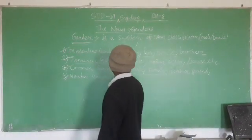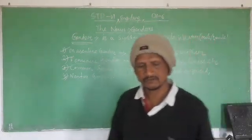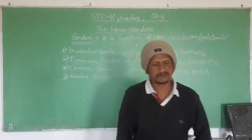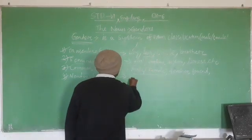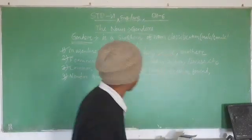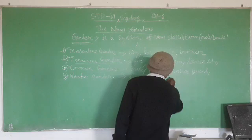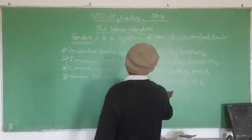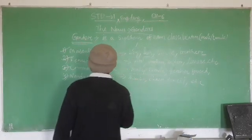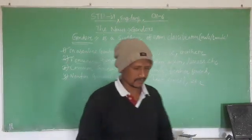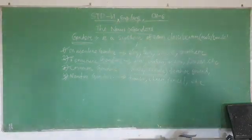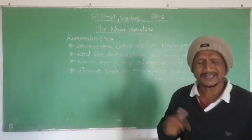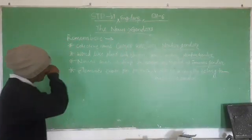Now we will discuss about the neuter gender. In English, non-living things are neither of masculine gender nor of feminine gender — they belong to neuter gender. For example, house, chair, pencil. There are so many neuter genders. These are things that do not belong to male or female. Neuter means neither male nor female.